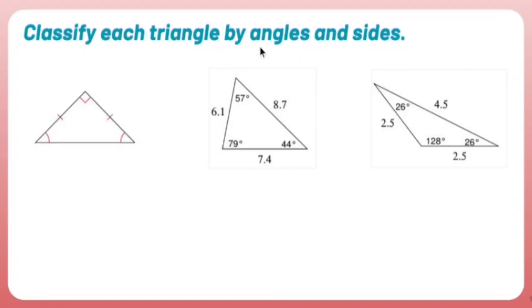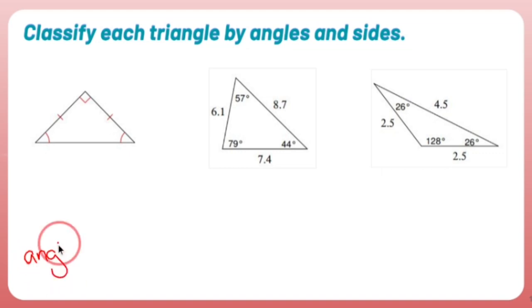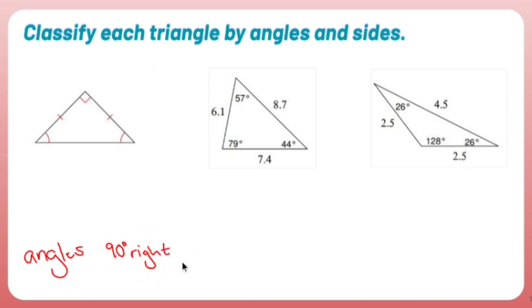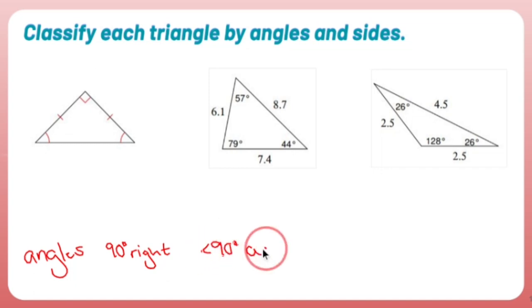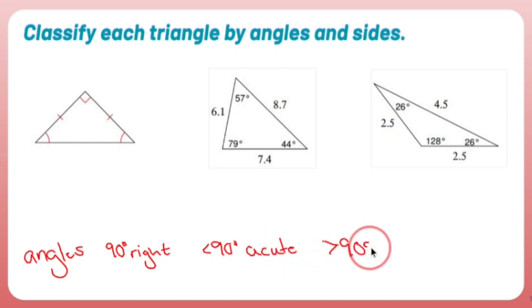Classify each triangle by angles and sides. If you want to classify a triangle by angles, you're looking at three words. If you see a 90 degree angle, it's considered a right triangle. If all of the angles are less than 90, it's acute. And if one of the angles is greater than 90, it's obtuse.